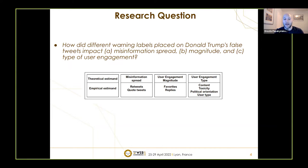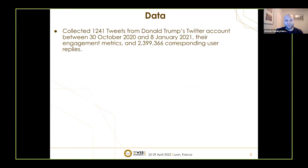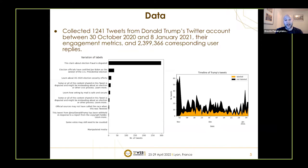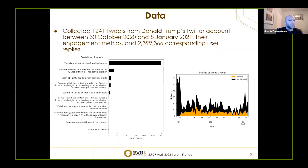We used the Twitter API and crawled the platform, collecting 1,241 tweets from Trump's account between October 30, 2020 and January 8, 2021, along with their engagement metrics, the warning labels placed on them, and over almost 2.4 million user replies. You can see on the left a variation of the labels placed — the most common was 'this claim about election fraud is disputed' — while on the right you can find the timeline of Trump's tweets and the ratios of moderated and non-moderated ones.